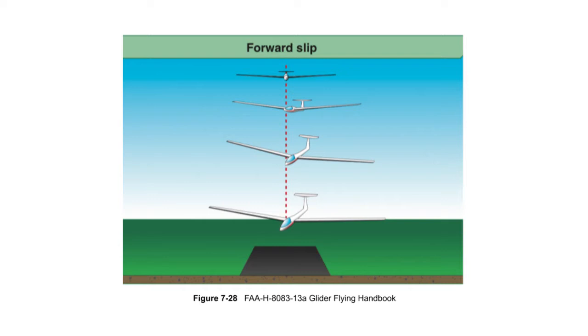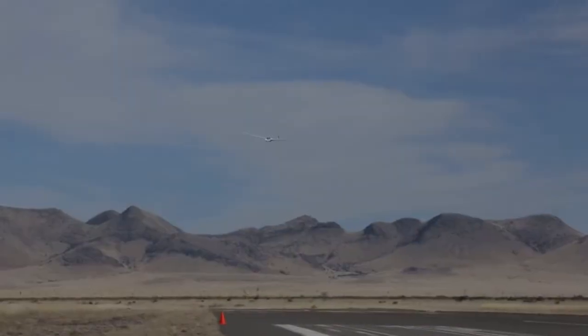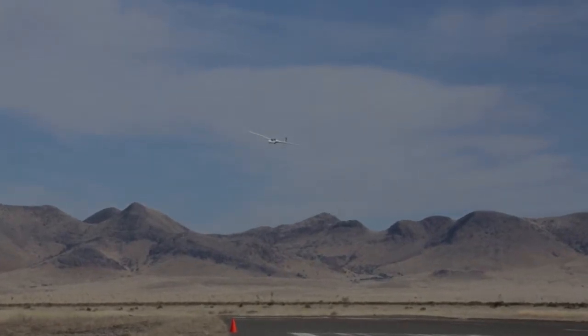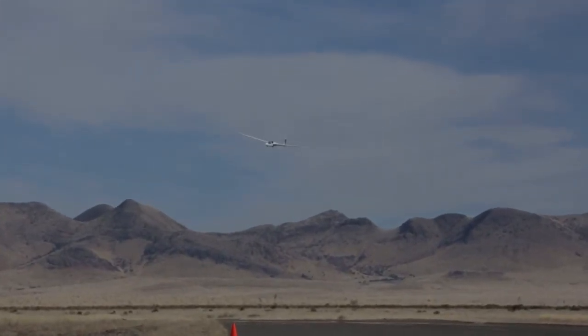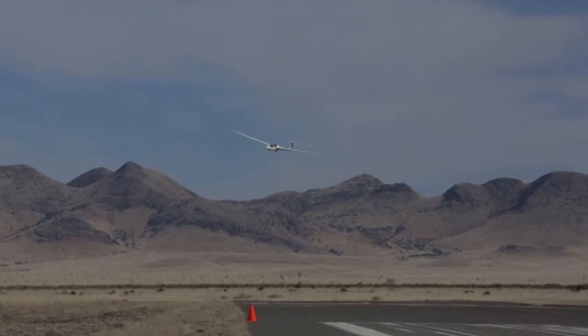A forward slip is used to steepen the approach path without increasing airspeed, with the track of the glider aligned with the runway centerline. Therefore, in a forward slip, the nose of the glider may be pointed away from the runway.